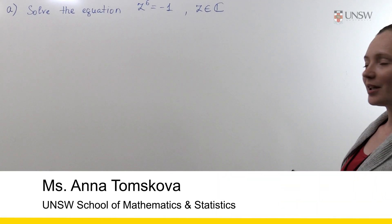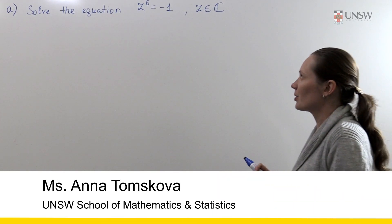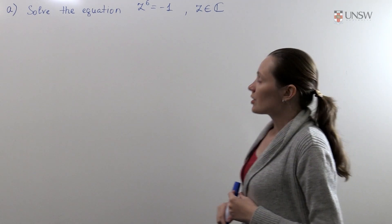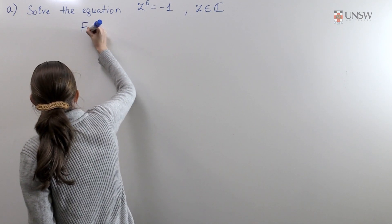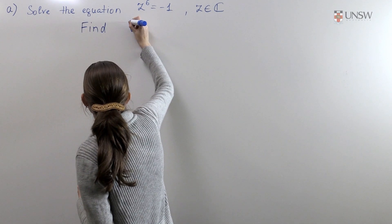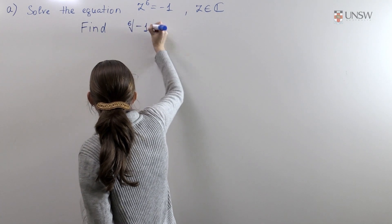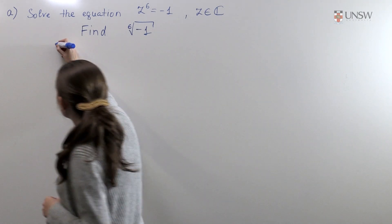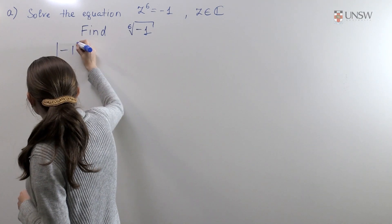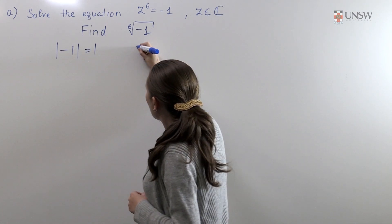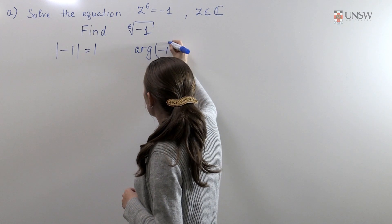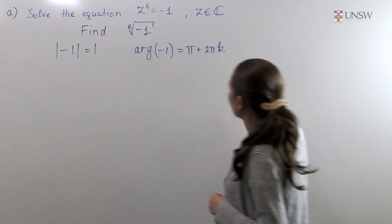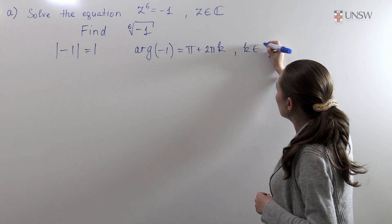The question is to solve the equation z to the power 6 equals minus 1, where z is a complex number. To solve the equation we need to find the 6th root of minus 1. To find this 6th root we need to calculate the modulus of minus 1, which is 1, and the argument of minus 1, which is π plus 2πk where k is an integer.